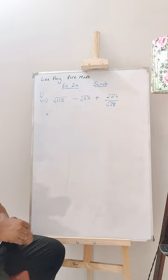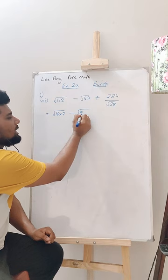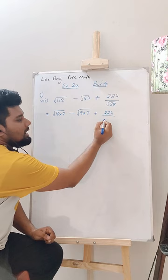So if you want to know how you are getting the answer, this is how you are getting it. You can write root over 112 as the product of 16 into 7. Root over 63 is 9 into 7. 224 is a whole number. You can write root over 28 as a product of 4 and 7.